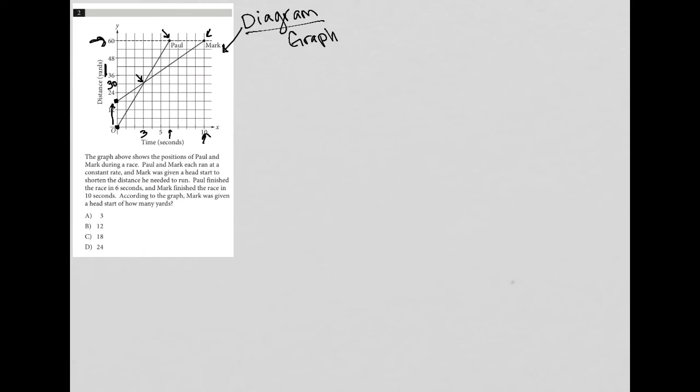Paul finished the race in six seconds. So I'm going to write that down. So Paul equals six seconds. And Mark finished the race in 10 seconds. So I'm going to say Mark equals 10 seconds.